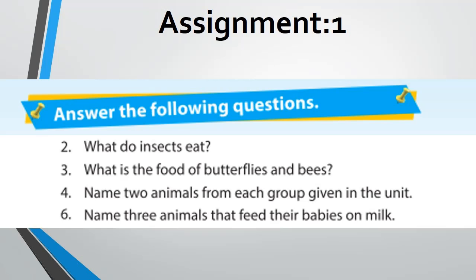Next question: name two animals from each group given in the unit — from all the animal groups mentioned, write the names of two animals from each group. Next question: name three animals that feed their babies on milk. Answers are also provided so you can take help from here.